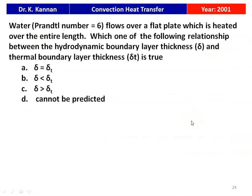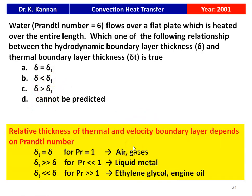Next question from the 2001 paper: water with Prandtl number equal to 6 flows over a flat plate heated over its entire length. Which relationship between hydrodynamic boundary layer thickness delta and thermal boundary layer thickness delta_T is true — delta equals delta_T, delta_T less than delta, delta less than delta_T, or delta greater than delta_T? For Prandtl number greater than 1, delta_T is less than delta. The answer is option C: delta is greater than delta_T.